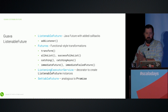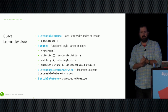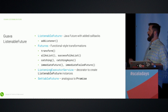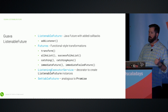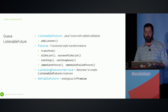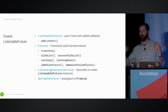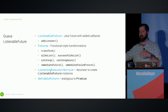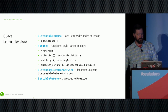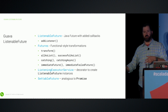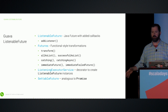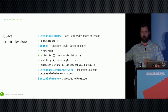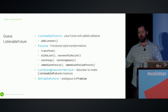Listenable futures are made up of a few pieces. There's listenable future itself — basically a Java future with an extra addListener method for callbacks — plus a helper class Futures with combinator-style methods: transform, allAsList, successfulAsList for converting a list of listenable futures to a listenable future of list, catching and catchingAsync for failure recovery, immediateFuture and immediateFailedFuture for building blocks, a listeningExecutorService decorator, and settable future which is analogous to promises.